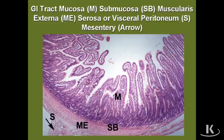Lastly, the outermost layer of the gut tube is either an adventitia — more connective tissue — and or that adventitia layer may be completely or partially covered by a serosa, which is the mesothelium that makes up the peritoneum.